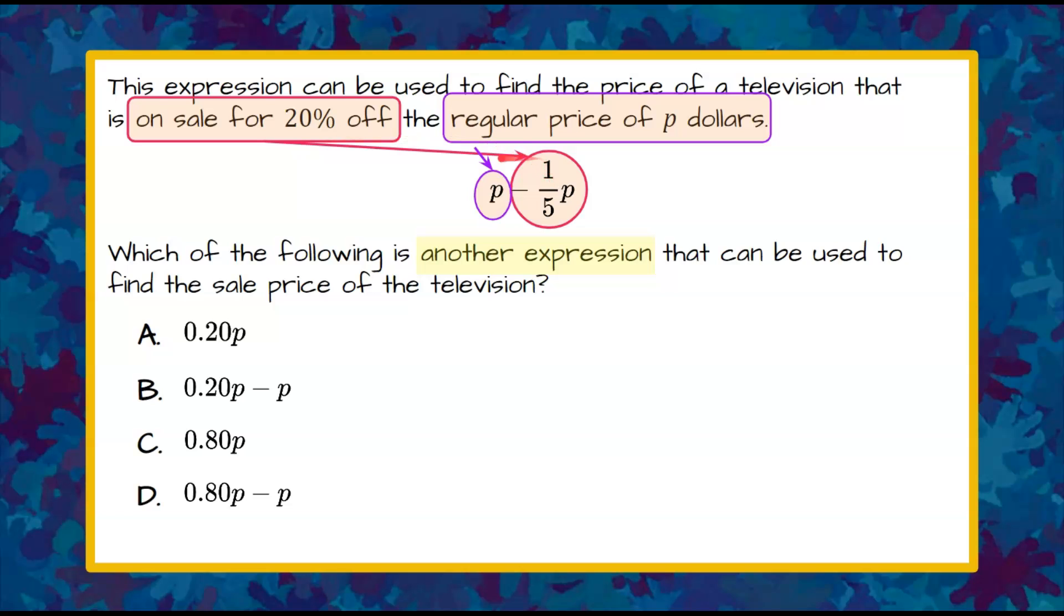So if we find this product, 1 fifth of P, that's how much we're taking away. We're going to discount it 20%.